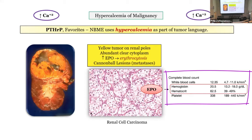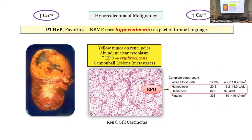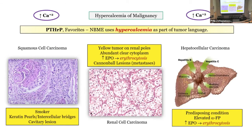If a patient presents with elevated hemoglobin/hematocrit and hypercalcemia, they're pointing you toward renal cell carcinoma. They may show you the pathology or ask about physical findings — the patient with renal cell carcinoma can present with hematuria. That's how they play the game.